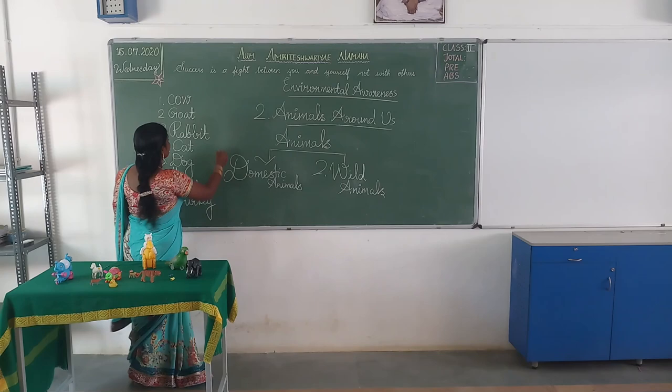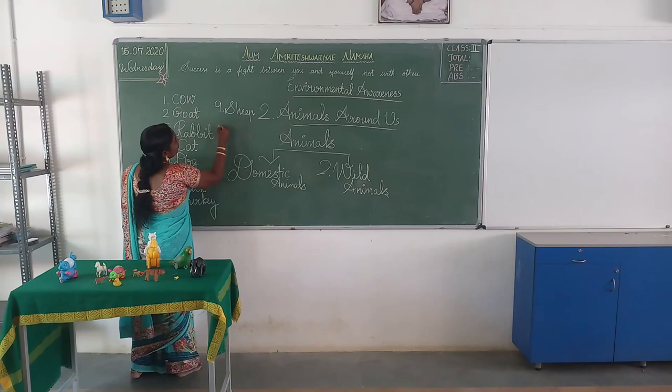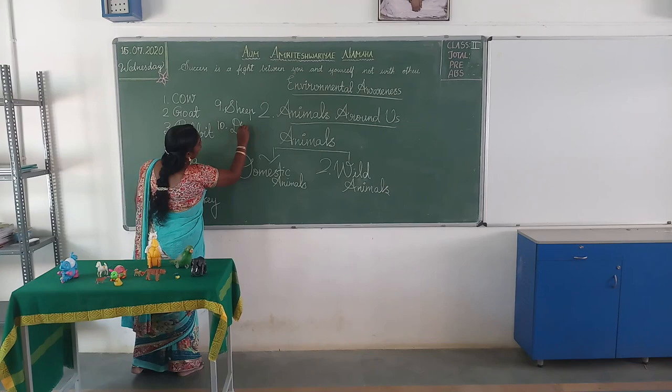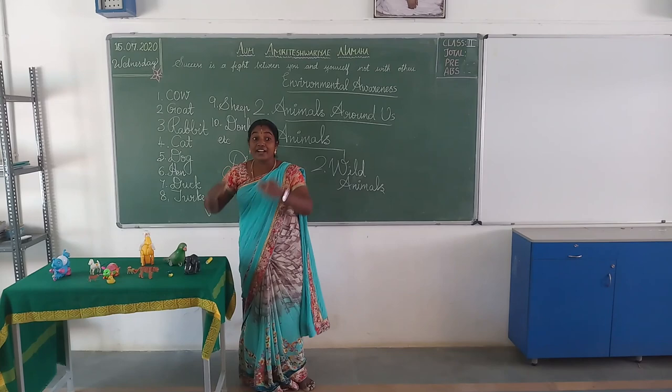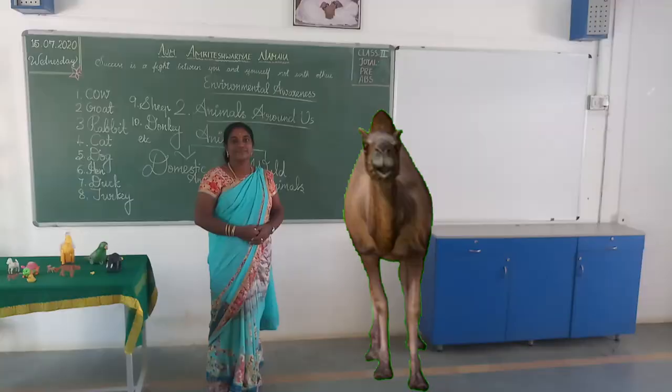Sheep — S-H-E-E-P, sheep. Which animal can you see near your house? These are the animals we can see near the house. These animals are called domestic animals.